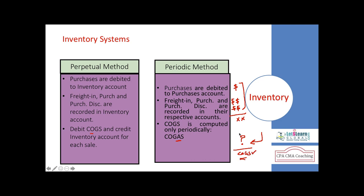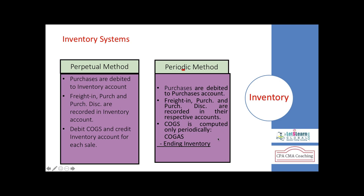Cost of goods sold depends on the value of closing inventory. You have to go and physically verify the inventory, record it, and find the dollar amount to arrive at cost of goods sold. Under the periodic inventory system, you need to find closing inventory to know cost of goods sold, which is not encouraged. Most industries — retail, manufacturing, etc. — prefer the perpetual inventory system, and today's ERP systems help maintain this method, allowing live visibility of inventory quantity and location.